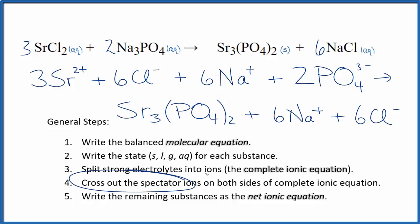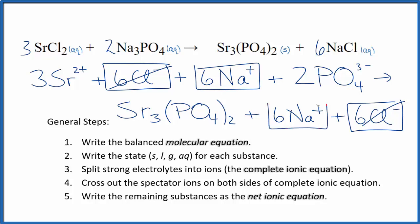Now we can cross out the spectator ions. They're on both sides. I can see in the reactants six chloride ions and again in the products. These are spectator ions. We're just going to cross them out. Six sodium ions and again in the products. Cross those out. What's left? That's the net ionic equation for SrCl2 plus Na3PO4.